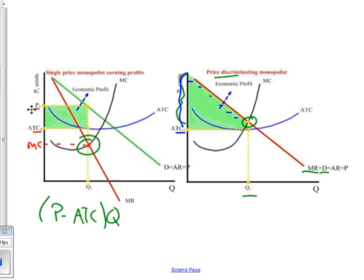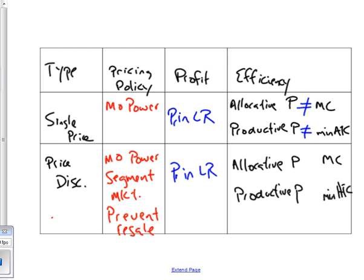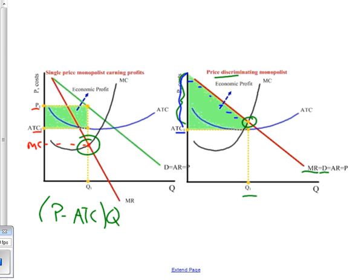What about price discriminatory monopolies? In some sense, they are allocatively efficient, but they are not productively efficient. So in this case, since the demand curve is the same as price, is the same as marginal revenue, in other words, every time we sell one more, we get that value in terms of marginal revenue. Well, at this point right here, price does equal marginal cost.